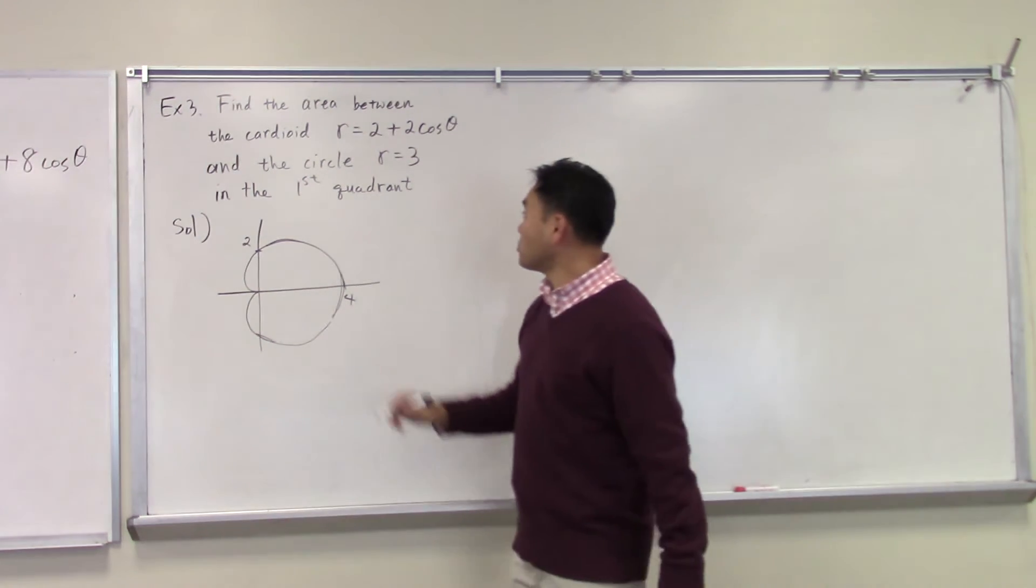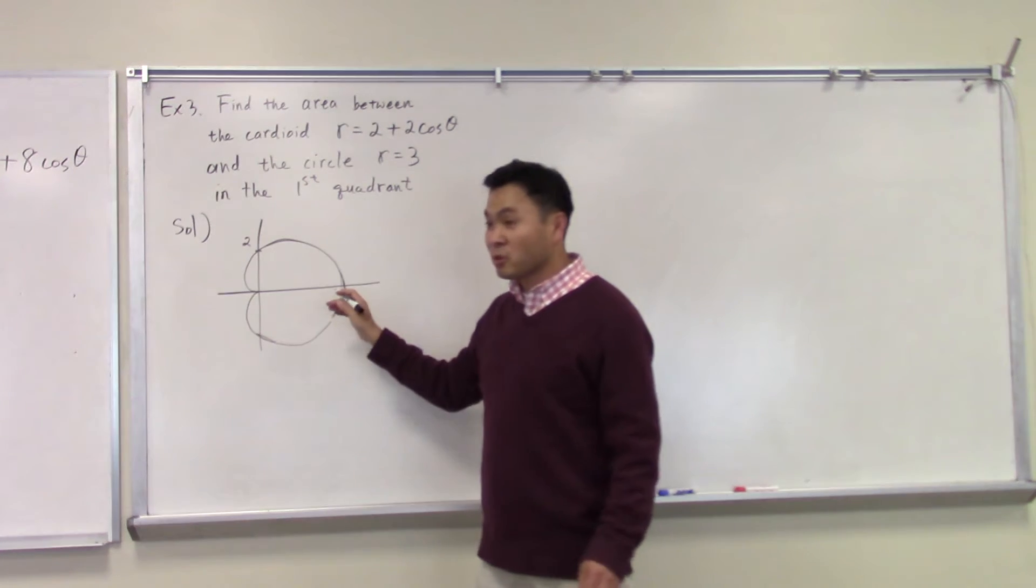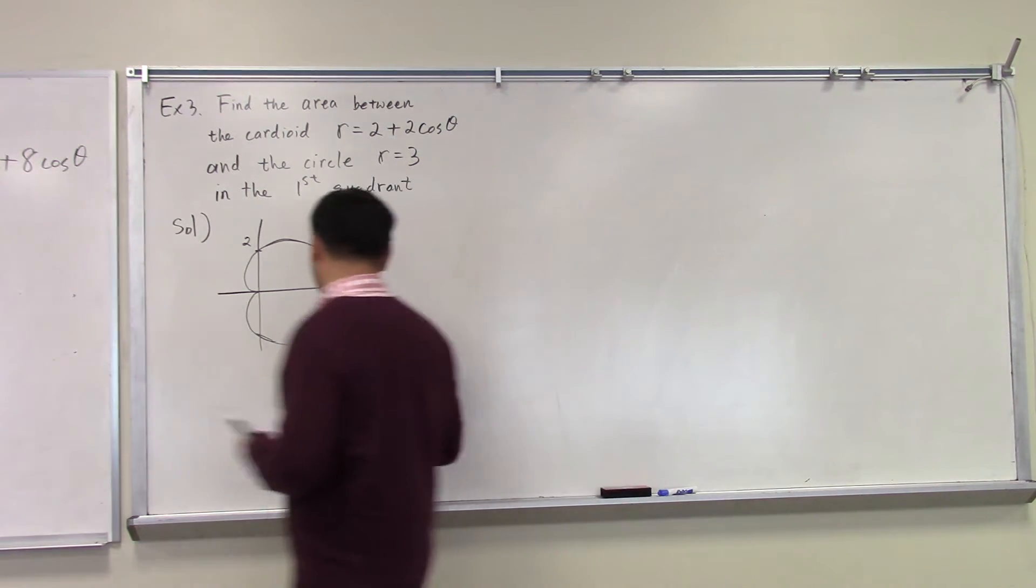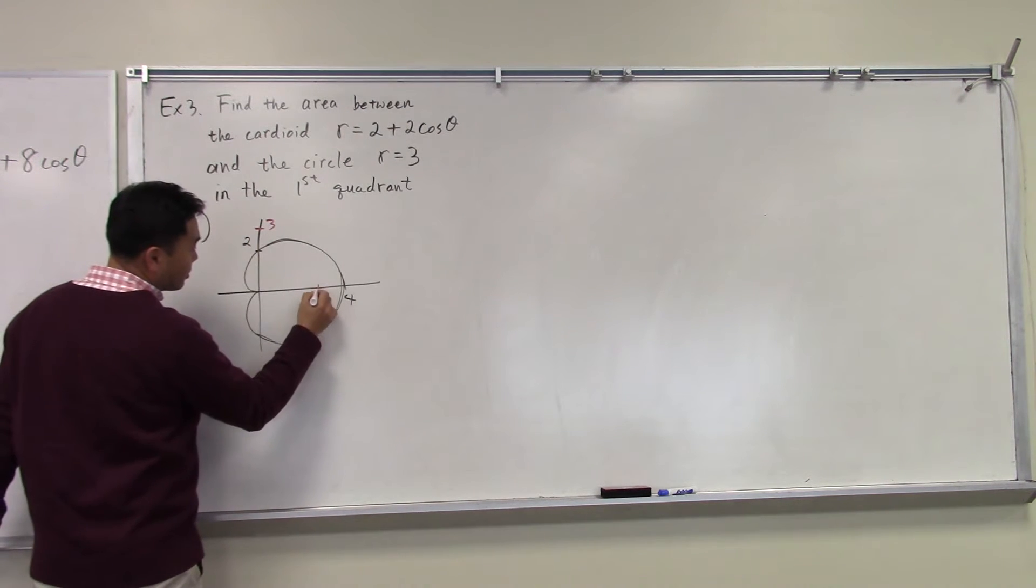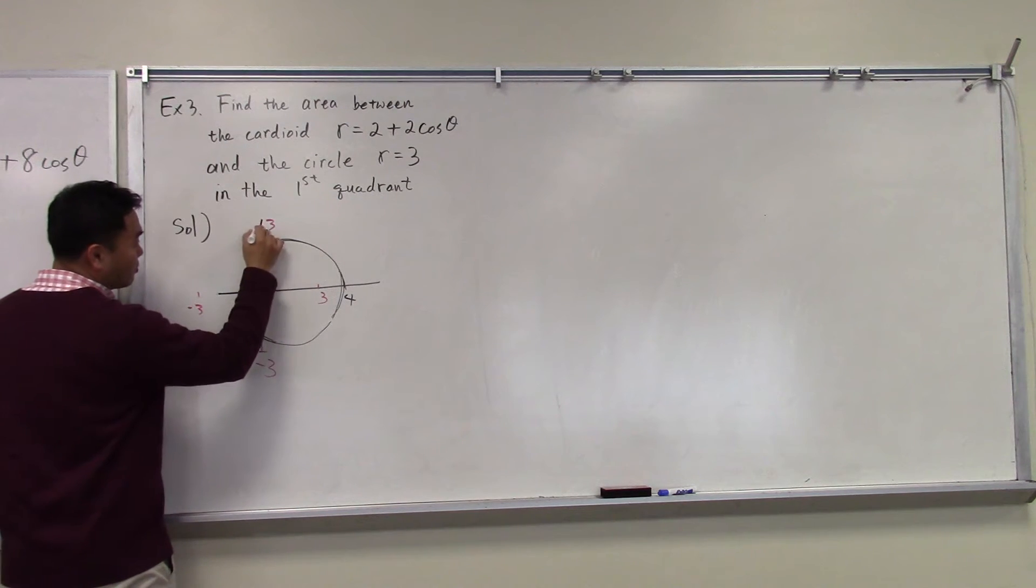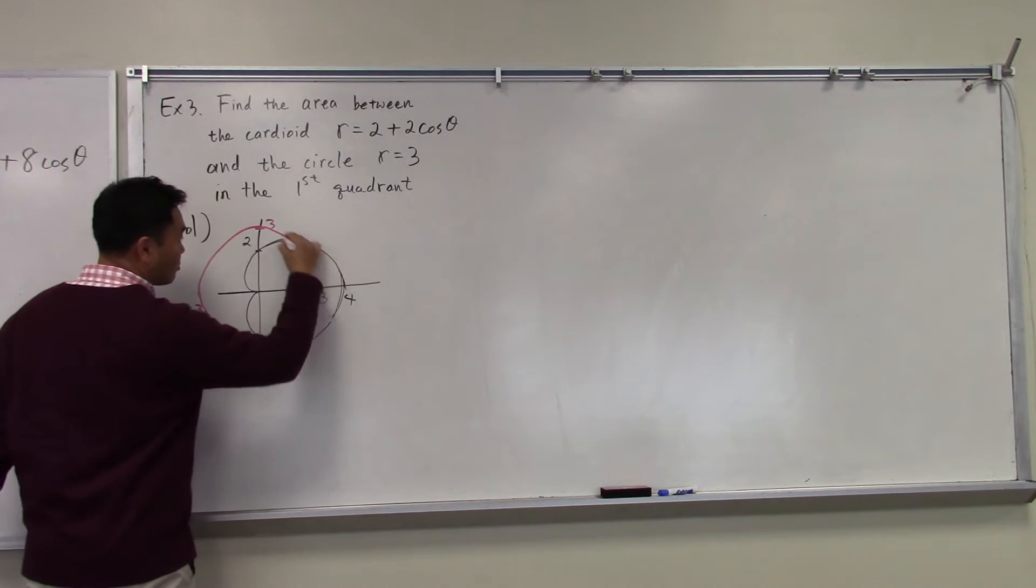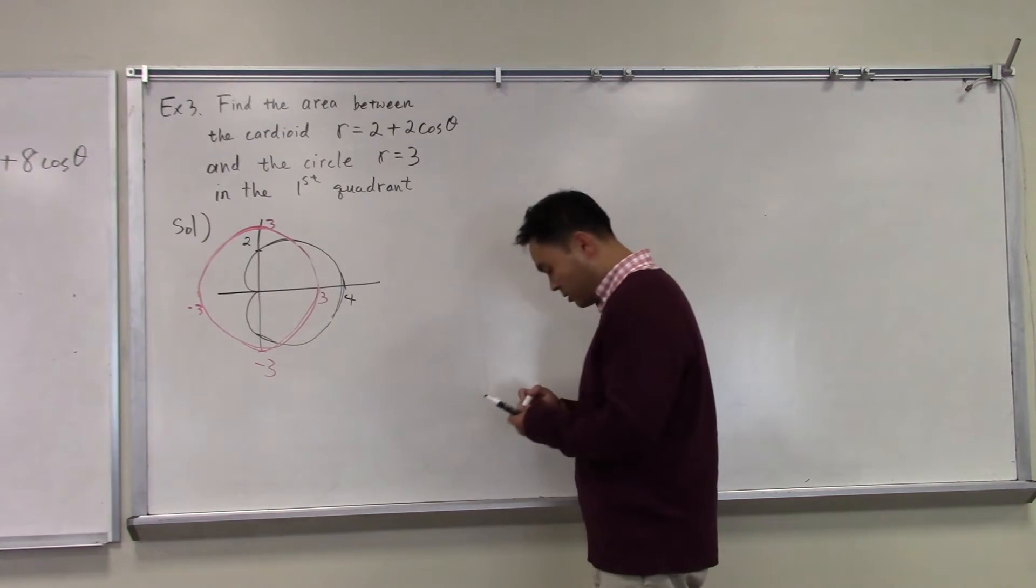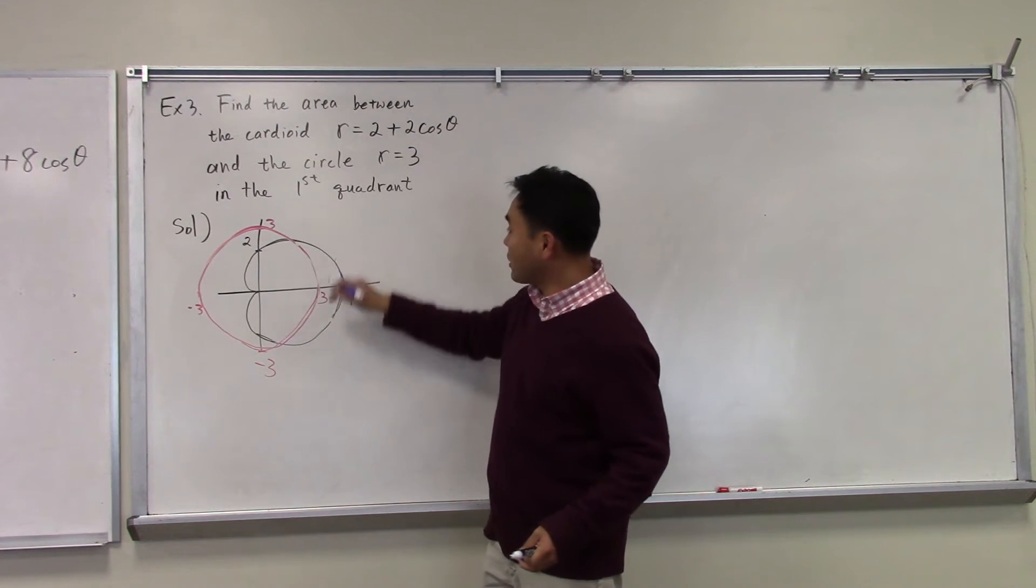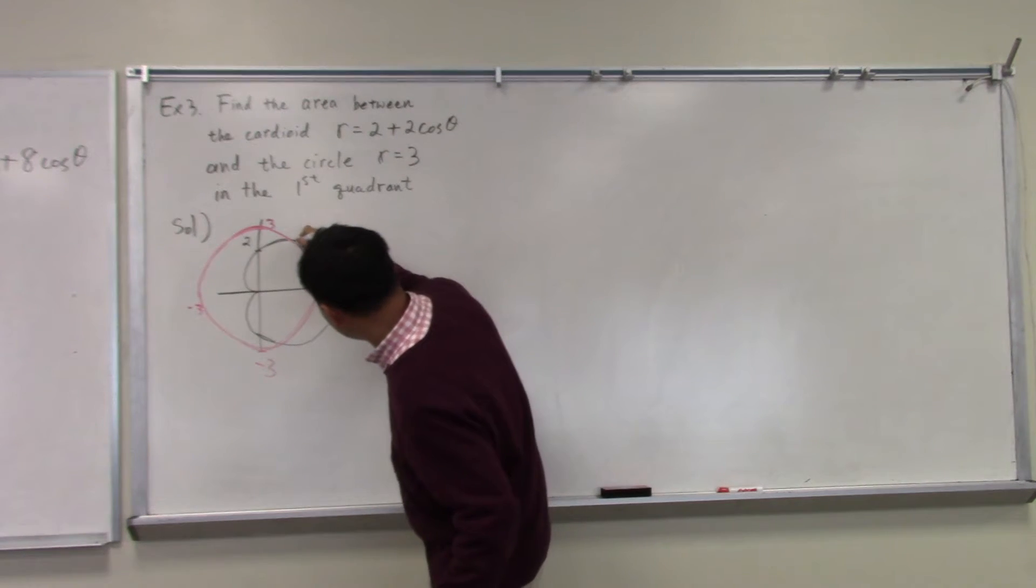Now, what about r equals three? r equals three means the radius is equal to three, meaning that you're collecting all the points that's distance three from the origin. If you try to draw all distance three, here's three, here's three, here's three, negative three actually. If you draw this circle, you get this shape, and now you can see which domain I'm talking about when I say in the first quadrant, the area between the cardioid and the circle. So it's really this thing here.